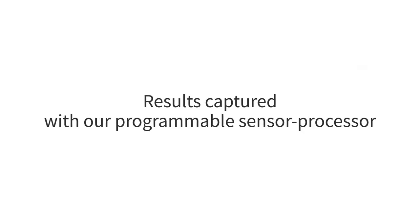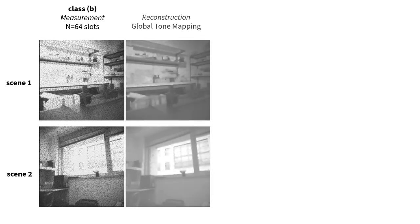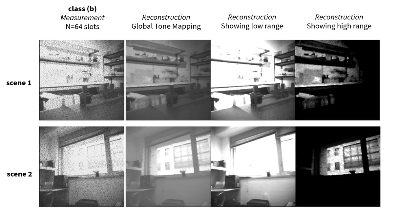Let us now see results captured by our focal plane sensor processor. The dithering clearly appears in the measurements captured by the sensor. The tone-mapped reconstructions indeed show information that would have been lost otherwise, under the lamps in scene 1 or in the window in scene 2. The information in the low range is reconstructed very well. On the other hand, the high range is suffering from a loss in image quality and shows some residual of the dithering that could probably be removed with further post-processing.